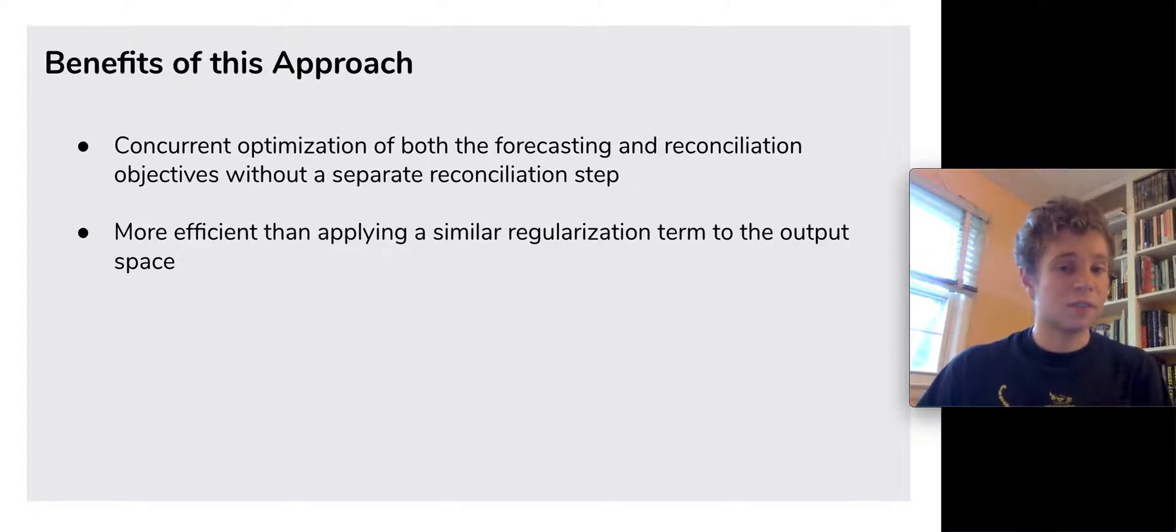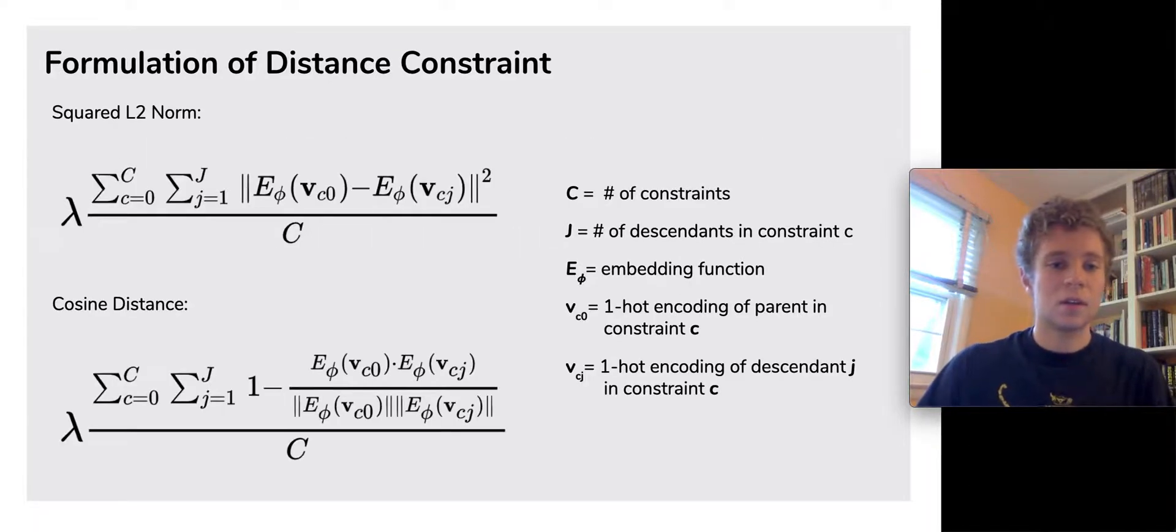There are two significant advantages to this approach. First, it permits concurrent optimization of both the forecasting and the reconciliation objectives, and second, it is more efficient than applying a similar term to the output space. The paper compares two formulations for the distance constraint, the squared L2 norm and the cosine distance. Both terms penalize the sum of the distances between each parent and all of that parent's bottom level descendants.